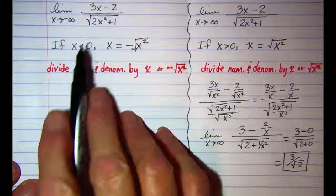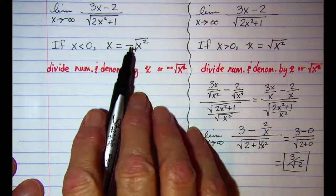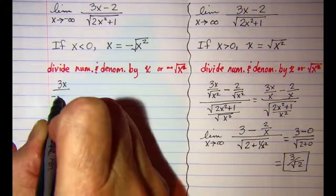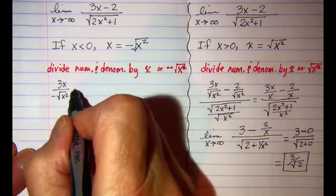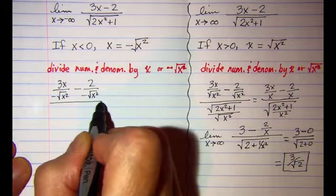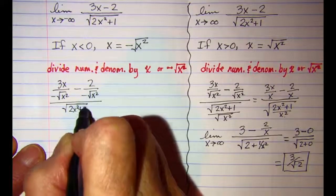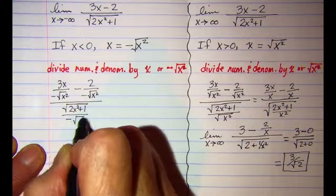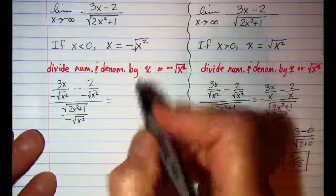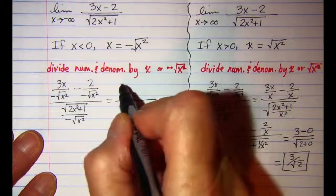Now let's do our limit as x approaches negative infinity. The only difference is that when we divide by x, we'll be dividing by negative √(x²). So we have 3x over negative x² minus 2 over negative x², and then in the bottom we have the square root of (2x² + 1) divided by a negative square root of x².